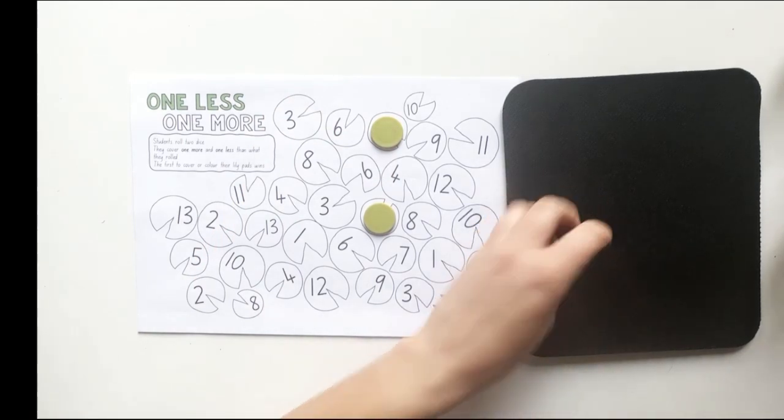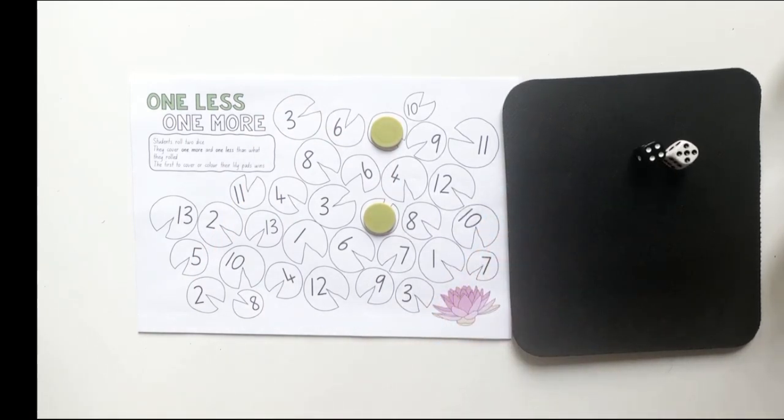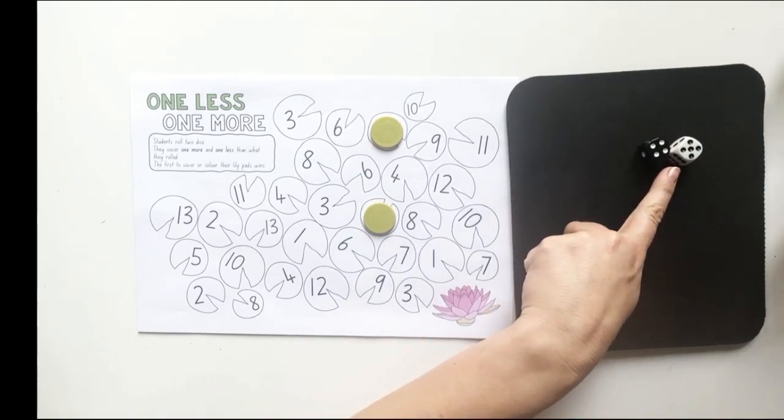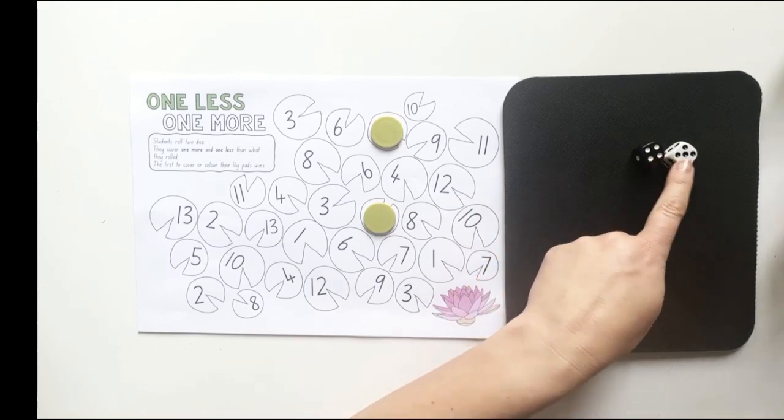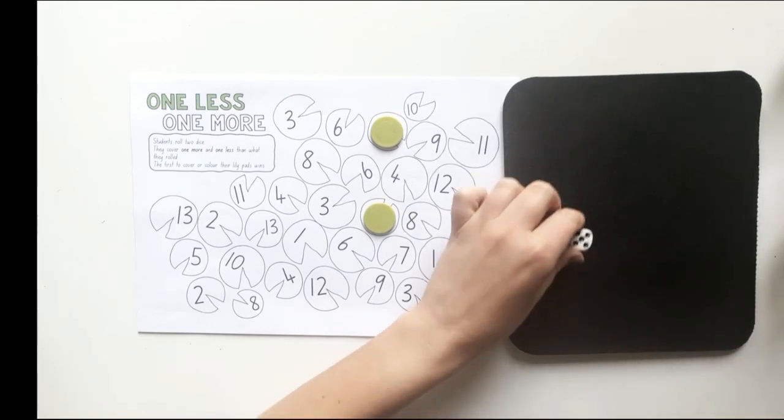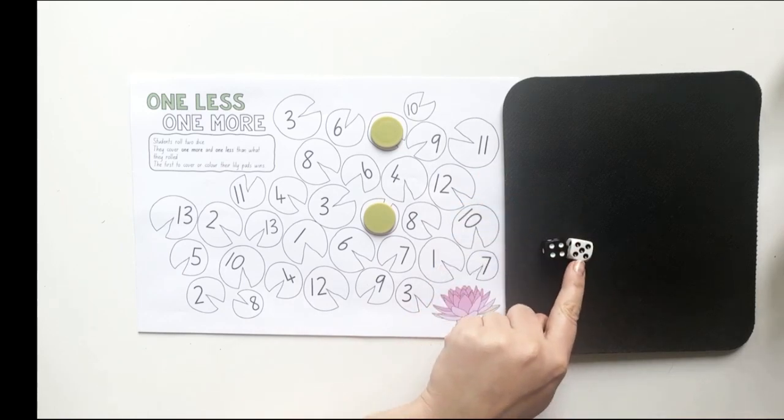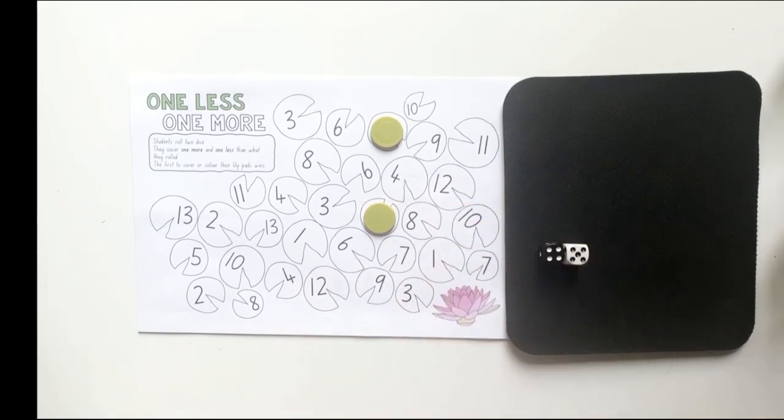Now I get another turn. I'm going to roll my two dice. I've rolled four and five. Well, I know five and five makes ten. So four and five must be one less than ten. This makes nine. Four and five combine together to make nine.